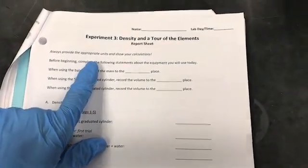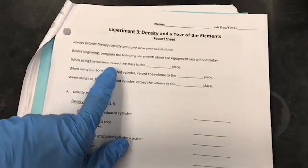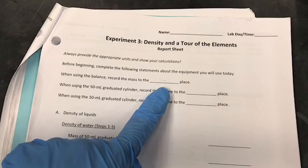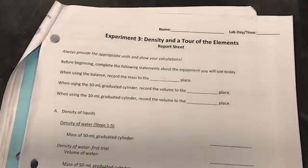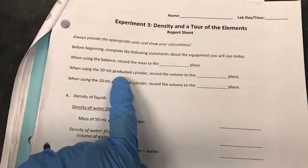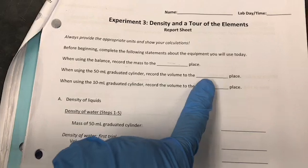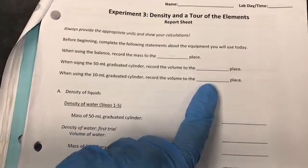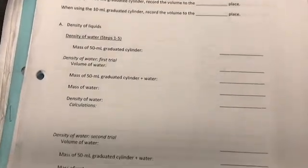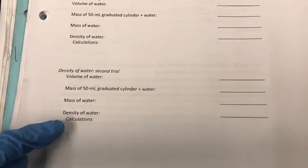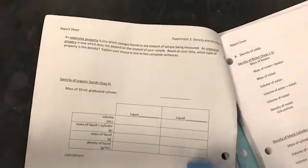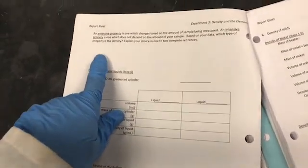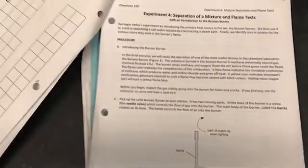This is basically the report. Make sure you fill in these three blank spaces. When using the balance, record the mass to the correct decimal place — check the balance to determine how many decimal places to record. Similarly, check the 50 milliliter and 10 milliliter graduated cylinders for their decimal places. Show all values and calculations. Answer the question on the report — that is very important. Finally, complete the periodic table worksheet we already discussed.